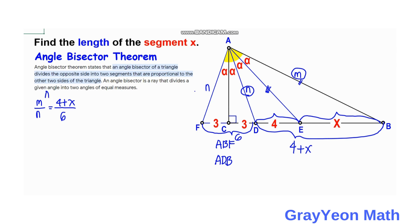For triangle ADB, the ratio M over N is equal to x over 4. We simply equate these two equations. Since M over N is equal to M over N, we have 4 plus x over 6 equals x over 4.